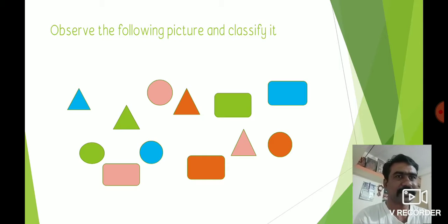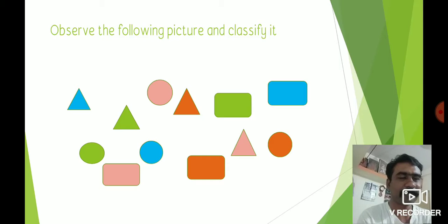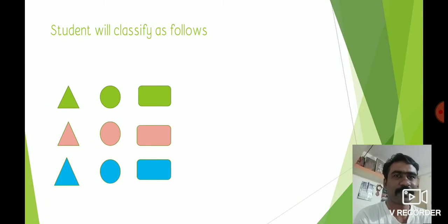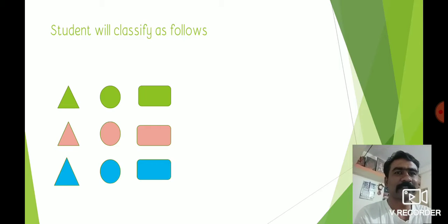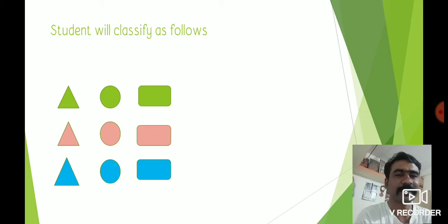Observe the following picture and classify it again. There are some shapes with different colors. Students will classify them in two ways: on the basis of color and on the basis of shape. The color-based collections are: collection of green color, collection of pink color, and collection of blue color. The shape-based collections are: collection of triangle shape, collection of circle shape, and collection of rectangle shape.